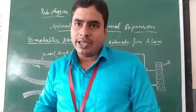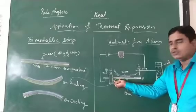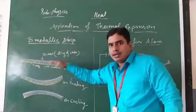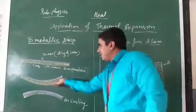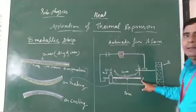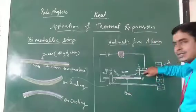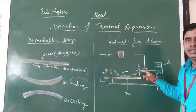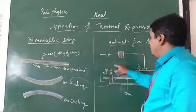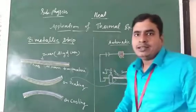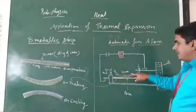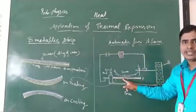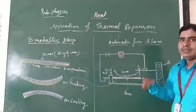When the circuit is completed, the alarm will start ringing. The bi-metallic strip bends in a spiral shape with iron on the inside and brass on the outer side. The free end of the bi-metallic strip touches the screw C, completing the circuit, and then the alarm starts ringing. So this is how thermal expansion in the bi-metallic strip triggers the automatic fire alarm on heating.